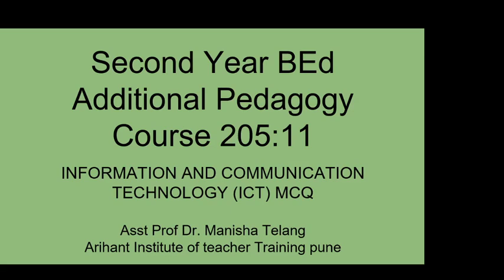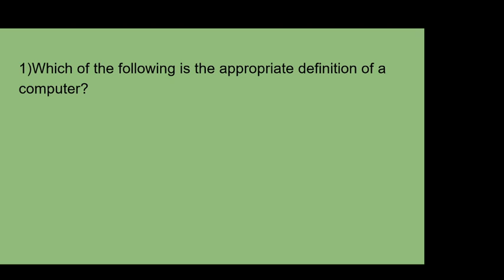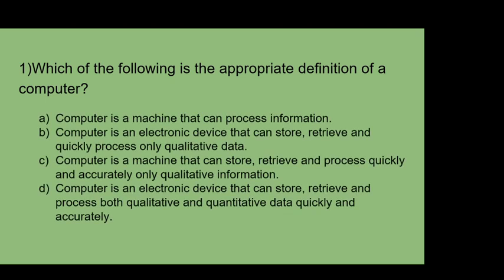This video is for second year BL additional pedagogy for 205 Information and Communication Technology MCQ. Which of the following is the appropriate definition of computer? A: A computer is a machine that can process information. B: A computer is an electronic device that can store, retrieve and quickly process only qualitative data. C: A computer is a machine that can store, retrieve and process quickly and accurately only qualitative information. D: A computer is an electronic device that can store, retrieve and process both qualitative and quantitative data quickly and accurately. The answer is D.